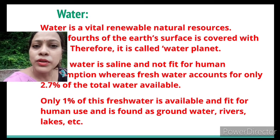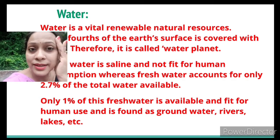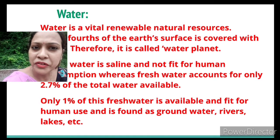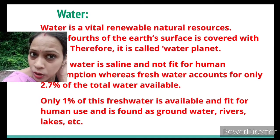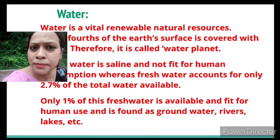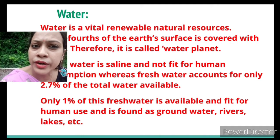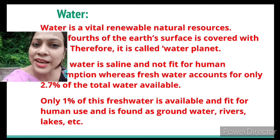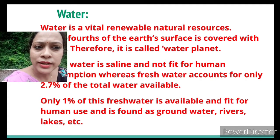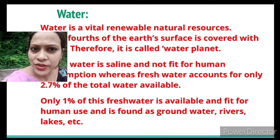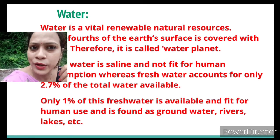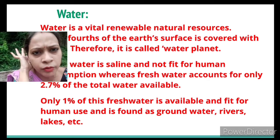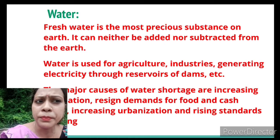Fresh water doesn't only mean tap water or hand pump water — it includes water found in drains as well; fresh water simply means water that does not contain salt. Rainwater falls over the surface, some seeps into the ground and some collects in lakes, rivers, or ponds. Of the 2.7% fresh water, only 1% is available to human beings because some is locked in ice caps and glaciers in high hilly areas. Fresh water is the most precious substance on earth.